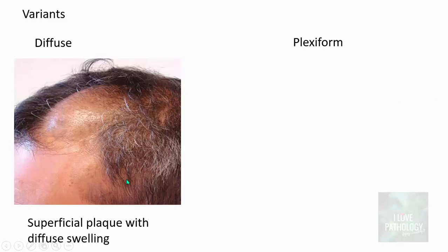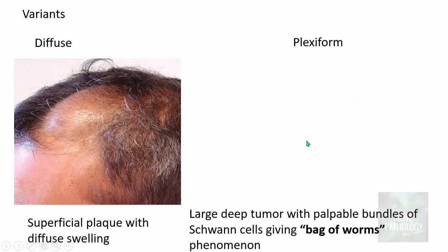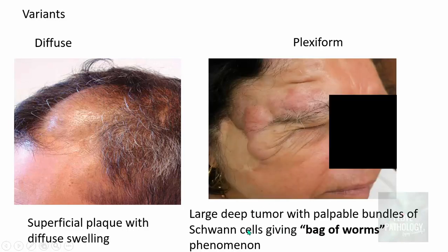What are the variants of neurofibroma? They can be diffuse or plexiform type. A diffuse type is basically a superficial plaque with diffuse swelling, whereas plexiform variants are larger, deep tumors with palpable bundles of schwann cells giving a bag-of-worms appearance. That's how a plexiform variant looks clinically.